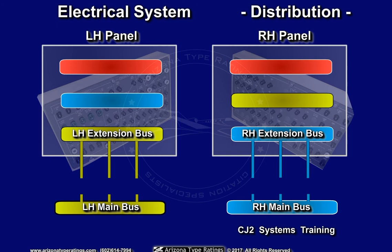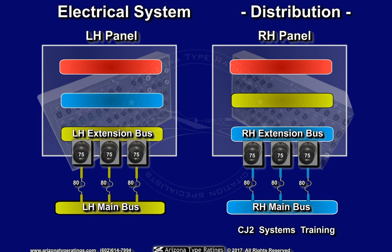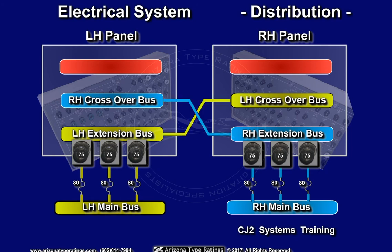Each extension bus is protected by three 80-amp fuses at the main DC bus in the tail and a 75-amp circuit breaker in the circuit breaker panel. Each circuit breaker panel contains a crossover bus that is fed from the opposite circuit breaker panel's bus, protected by a 35-amp circuit breaker.